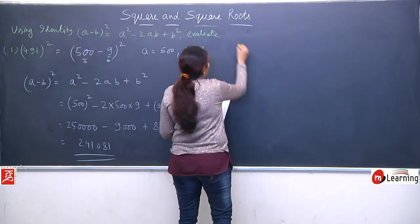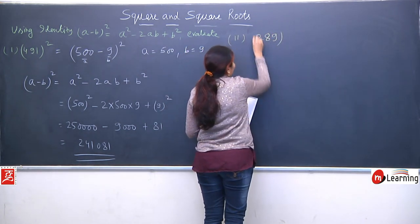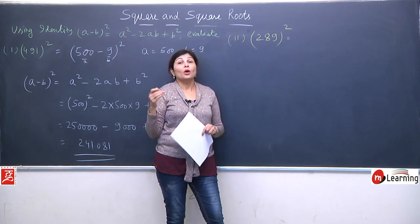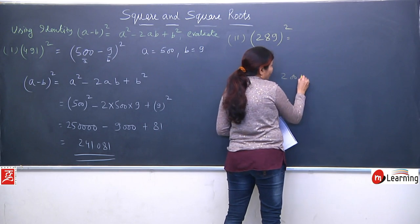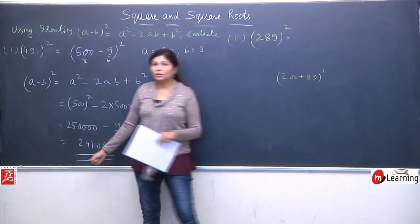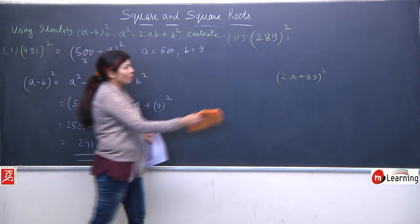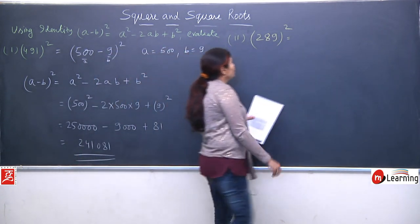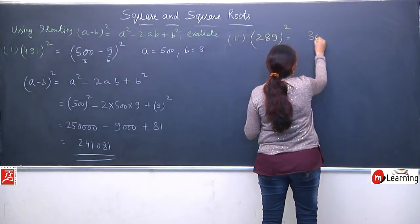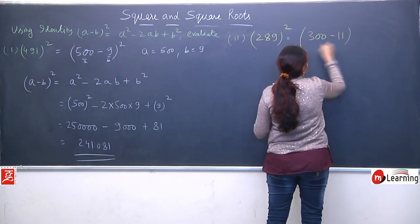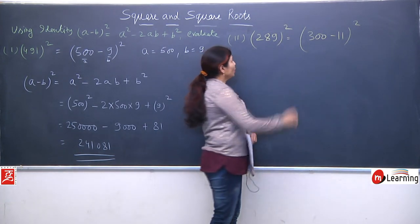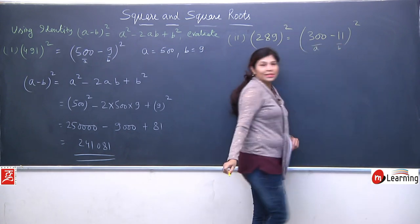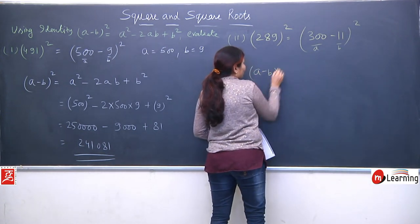Second is 289 whole square. Again yahan par we have two options — either we can multiply directly 289 by 289, or we can use the plus identity like (200 + 89) whole square. But as I told you, it would be more complicated — 200 ka square find karna to easy hoga, but 89 ka square find karna mushkil hoga. So we will use the negative identity. We can write this as (300 - 11) whole square, because 300 minus 11 gives 289. This is a and this is b.